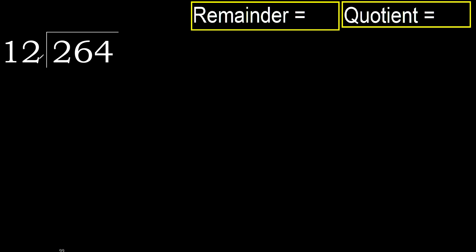264 divided by 12. 2 is less, therefore next. 26 is not less, therefore with 26 — 12 multiplied by which number is nearest to 26?